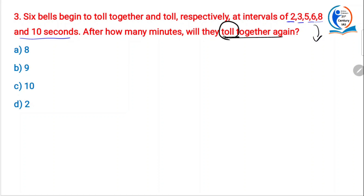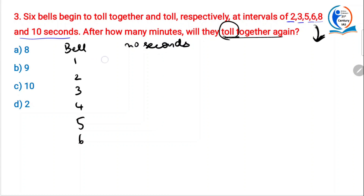I am trying to make the concepts clear so you can use them for other problems without any effort. Let me label bell number 1, 2, 3, 4, 5 and 6 with their intervals. I am taking positions up to 10 because the highest interval is 10 seconds. Bell 1 rings at interval of 2 seconds, bell 2 at 3 seconds, bell 3 at 5 seconds, bell 4 at 6 seconds, bell 5 at 8 seconds, bell 6 at 10 seconds.